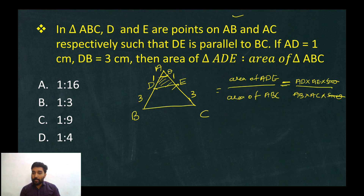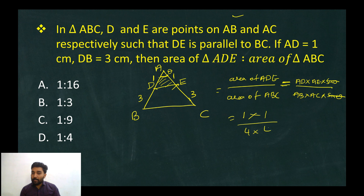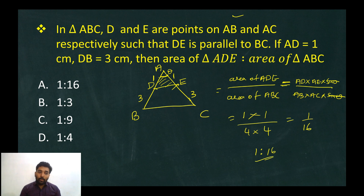So the ratio is AD over AB times AE over AC. Since AD equals 1 and DB equals 3, AB equals 4. By the similar triangles property, AE over AC is also 1 over 4. Therefore the area ratio is 1 by 16. Option A is the answer.